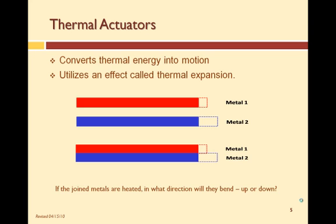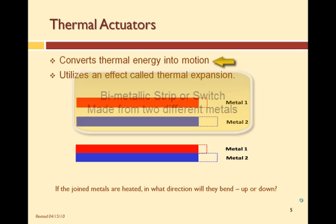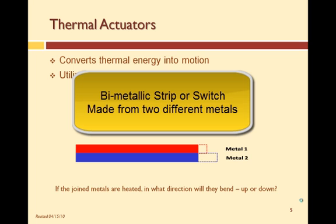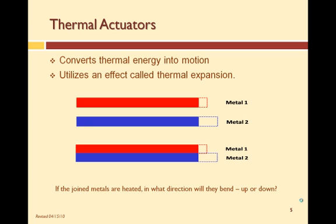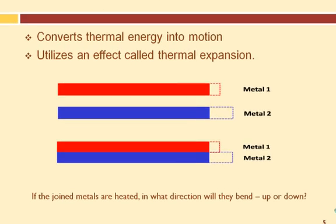Let's start with the discussion of thermal actuators. Thermal actuators are actuators that convert thermal energy into movement. One type of thermal actuator is the bimetallic strip, a strip made from two different metals, such as steel and copper. However, the two metals have different temperature coefficients, which means when heated, they expand at two different rates. The graphic illustrates this.